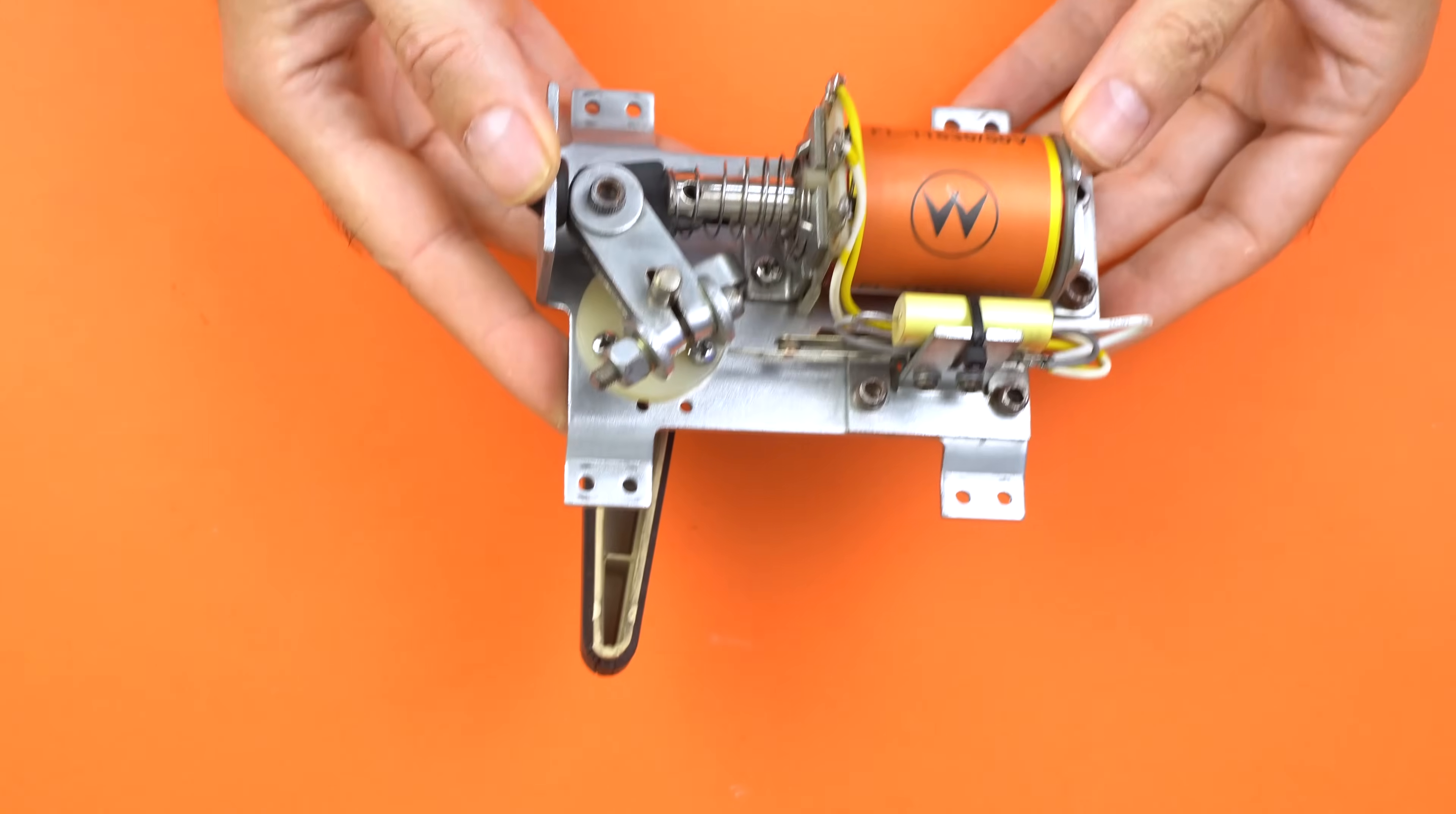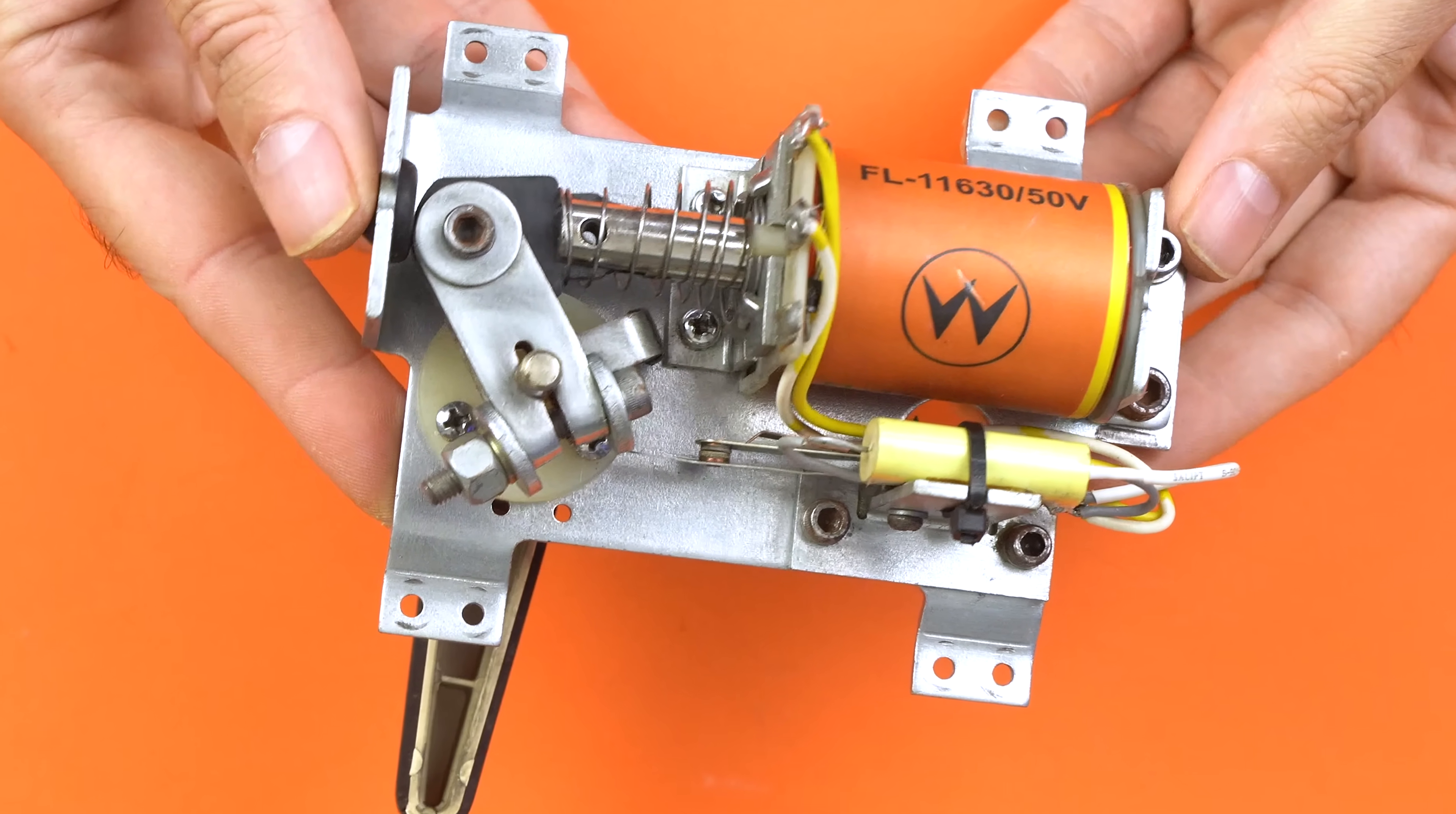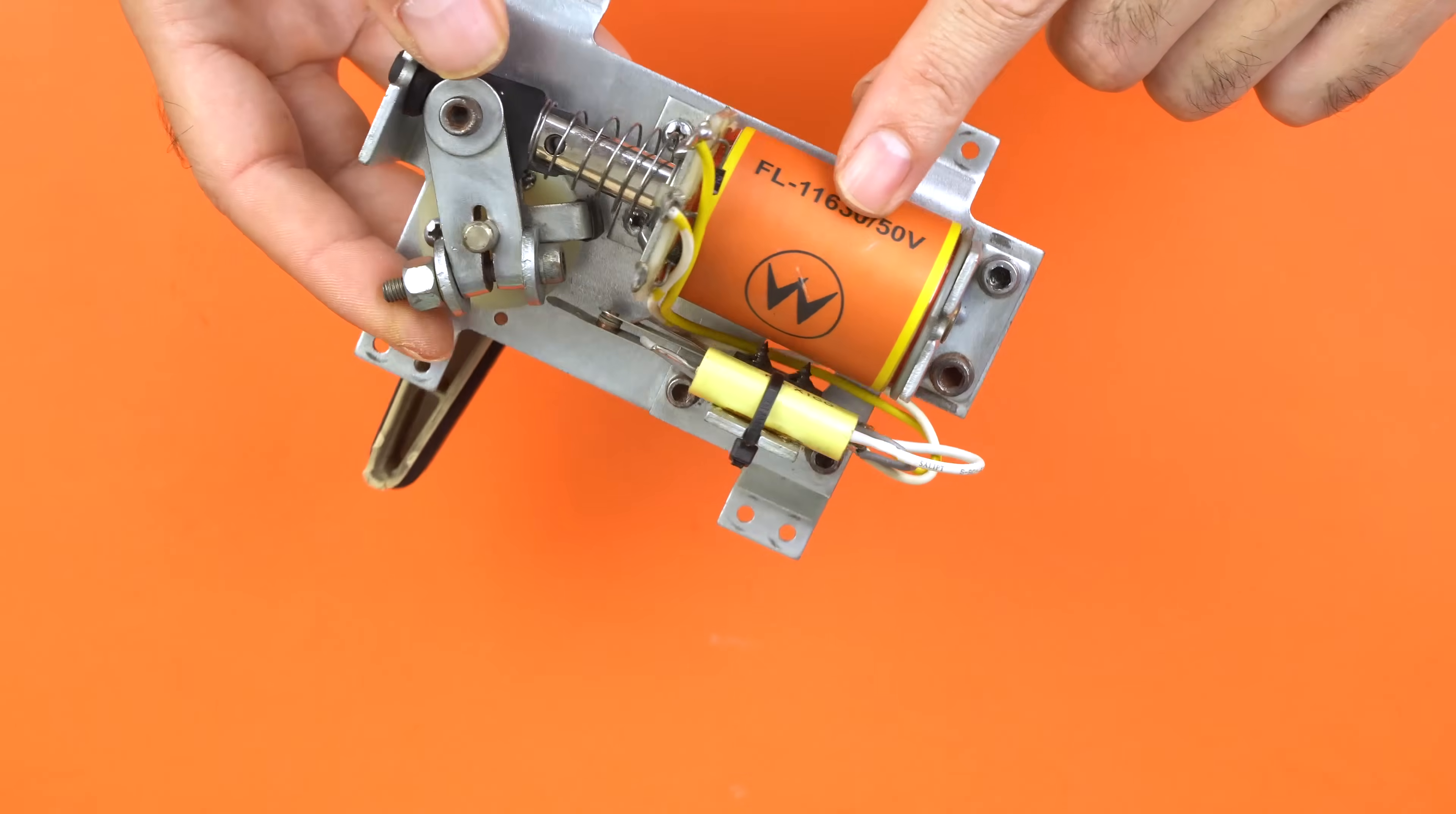But how is a pinball assembly actually built? This is such a beautiful piece of engineering. What you see here is an original Williams assembly I salvaged from an old pinball machine and fully restored, even recreating the original coil sticker. Before building my own version, I want to show you up close and explain how this little masterpiece of mechanics works.